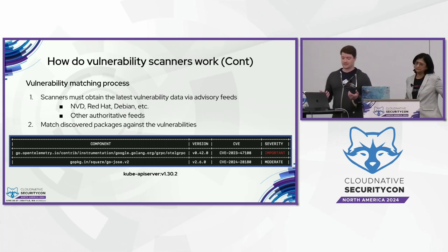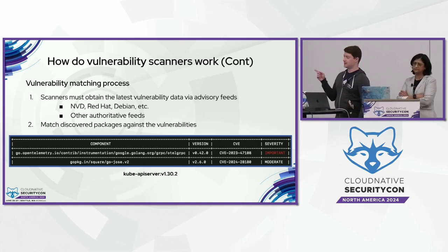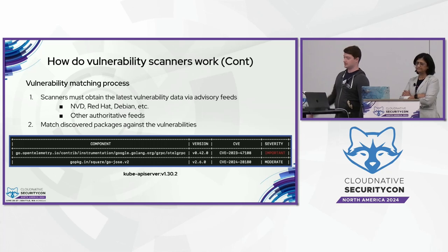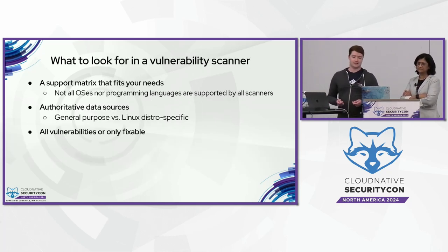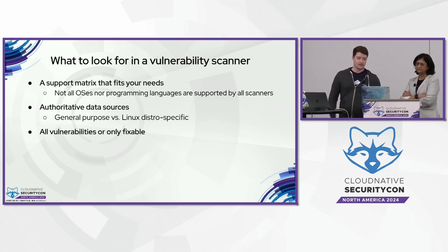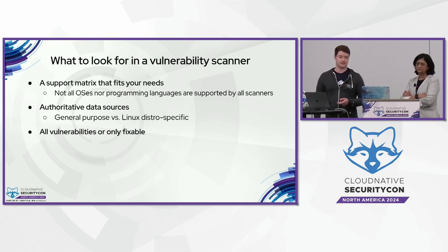What we end up with is some kind of vulnerability report like what we see here. This is the result of when I scanned the kube API server image, the latest one, with the StackRox Scanner v4. Just a heads up — if you're using the latest version, there might be some vulnerabilities in there. I mentioned the steps a vulnerability scanner will take, but there's a reason there are so many out there — they all do many different things. Let me tell you about some differentiating factors you should consider when evaluating them.